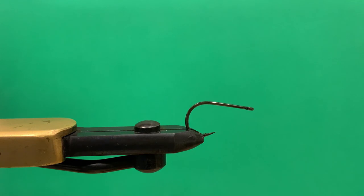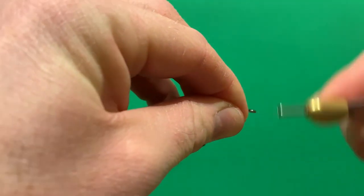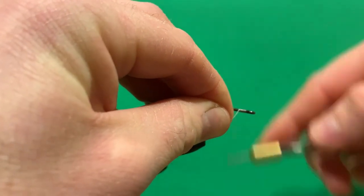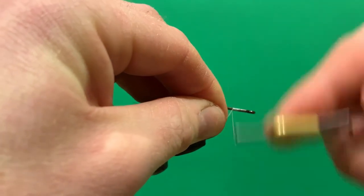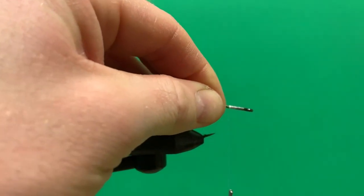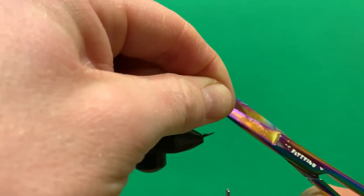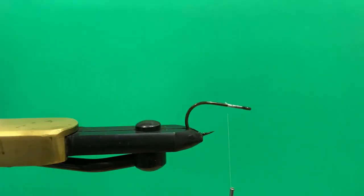We'll start the thread off right at the eye of the hook. We're going to work back maybe five or six millimeters from the eye of the hook—that's where we'll attach our dumbbell eyes.